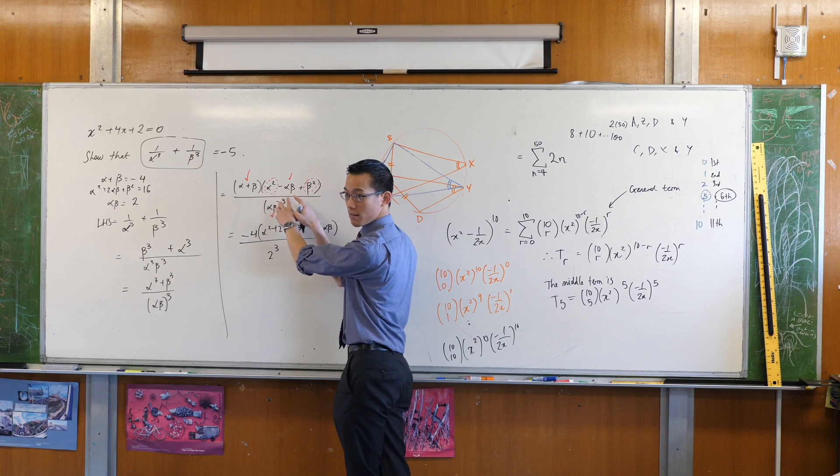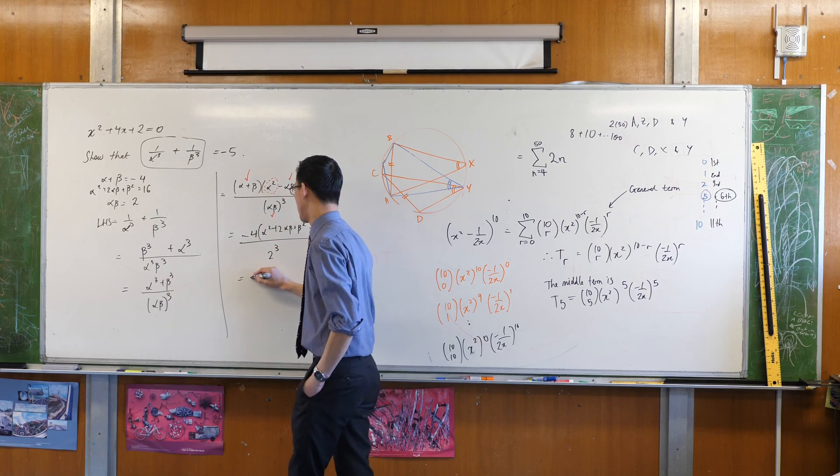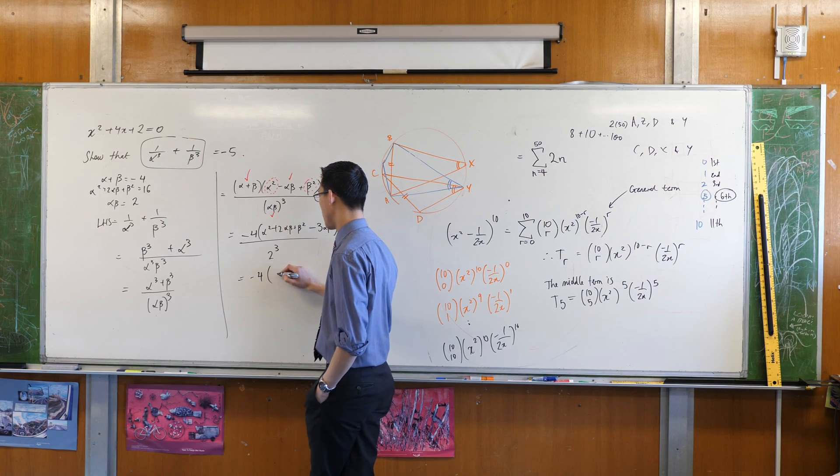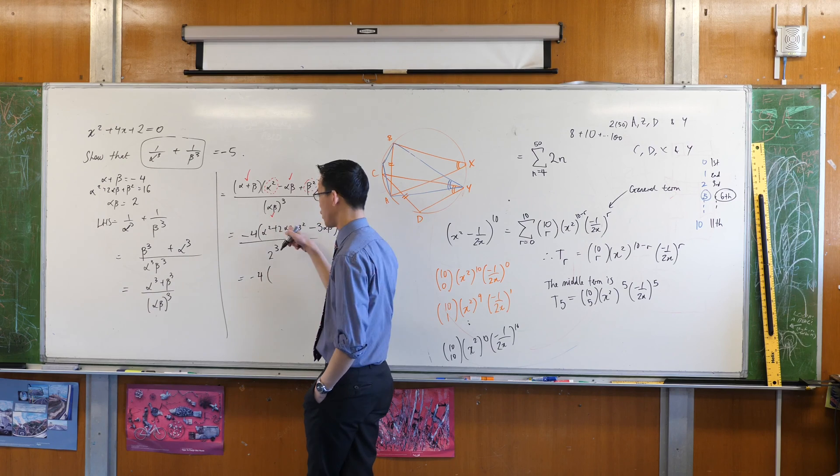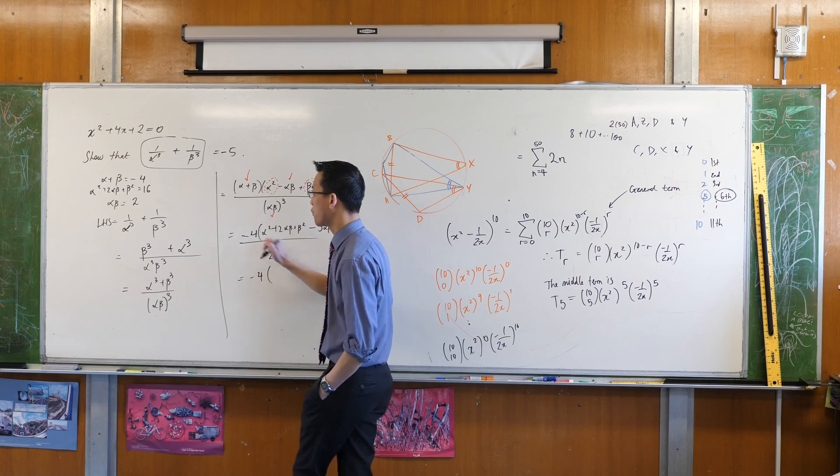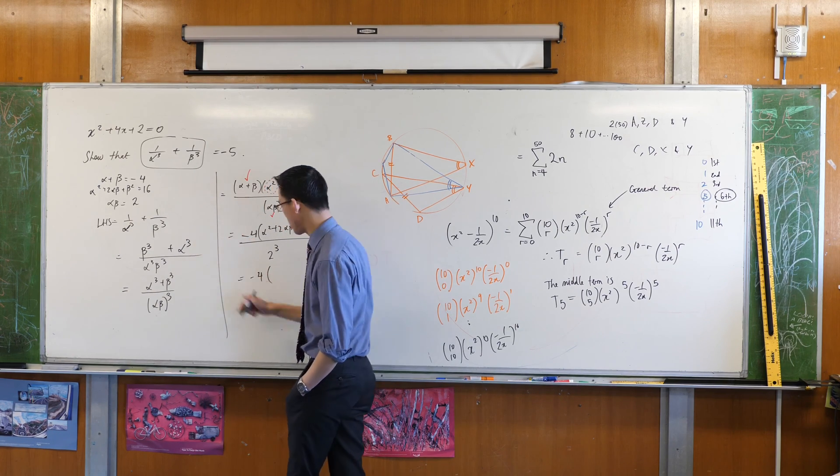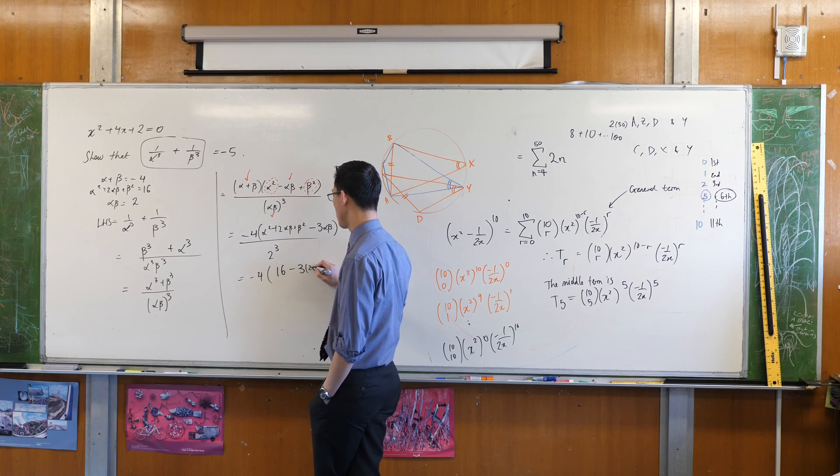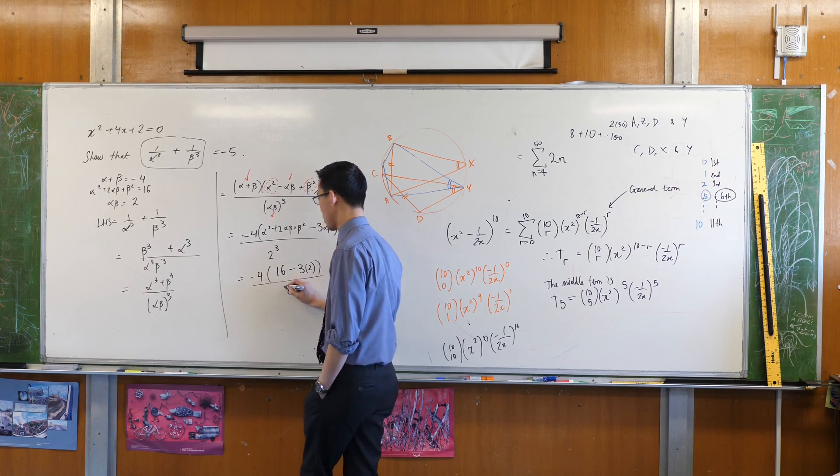I'm good. I'm pretty much there. So this is negative four times, because I've written it over there, I can just substitute it for 16. So if you write this down so you can refer to it, you're good. Minus three times, what's that? Two. And then you're pretty much home and hosed.